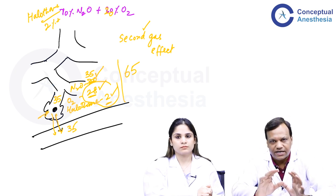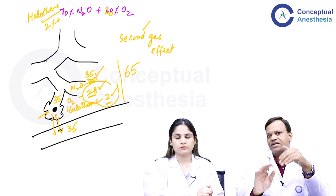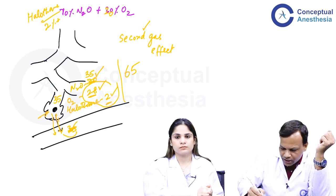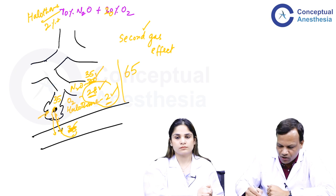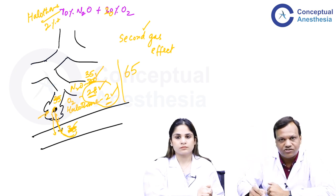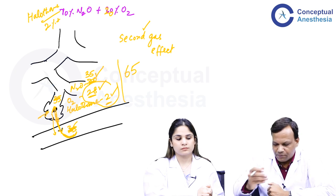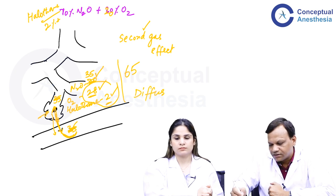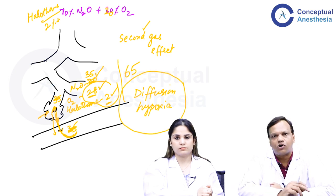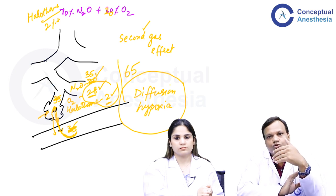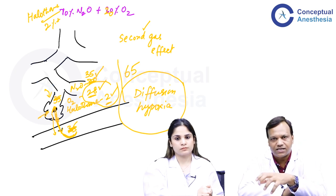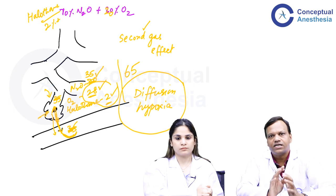When we stop nitrous oxide during recovery, whatever nitrous oxide is in the blood rapidly diffuses back into the alveoli. Because a large amount returns quickly, it dilutes the oxygen in the alveoli — this is known as diffusion hypoxia. This is a complication during recovery from nitrous oxide. To prevent it, before stopping nitrous oxide we give 100% oxygen for a few minutes, even though diffusion hypoxia is short-lasting.